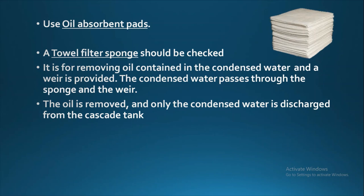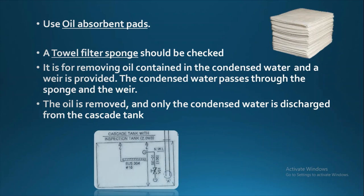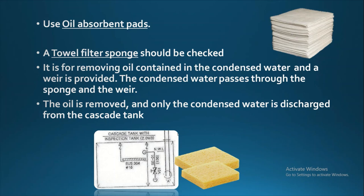Next, a towel-like filter sponge should also be checked. This towel-like filter sponge is provided in the hot well for separating the chambers. It is for removing the oil contained in the condensed water, and a weir is provided. The condensed water passes through the sponge and the weir, and then the oil is removed, so only clear condensed water is discharged from the cascade tank.